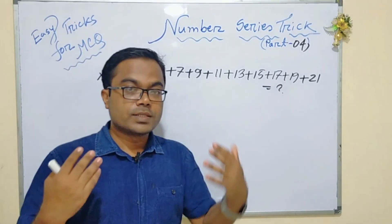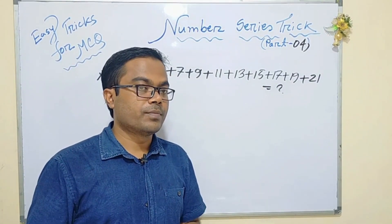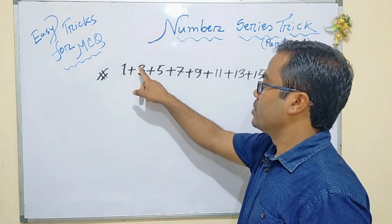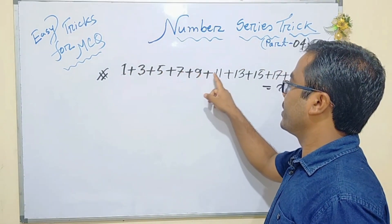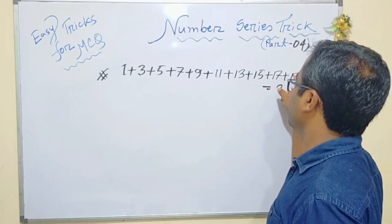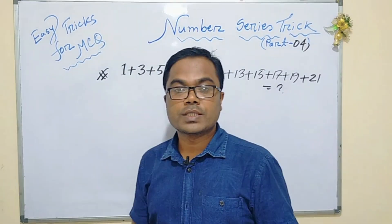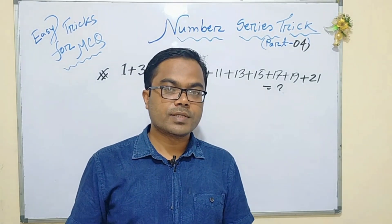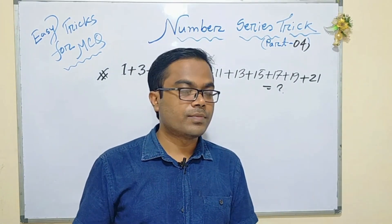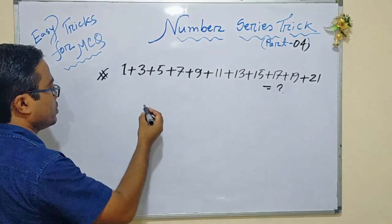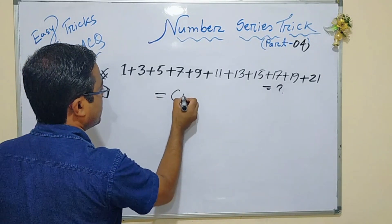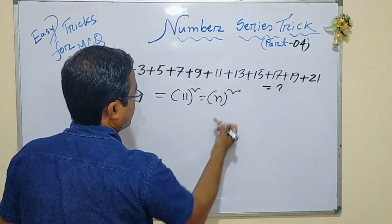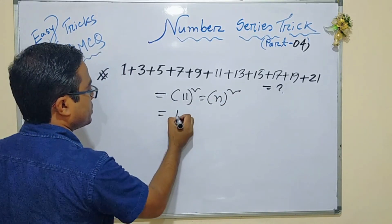First, check the number of terms. How do you want to find the total? Count: 1, 2, 3, 4, 5, 6, 7, 8, 9, 10, 11. So the number of terms is 11. The answer is 11, and then we get 12.